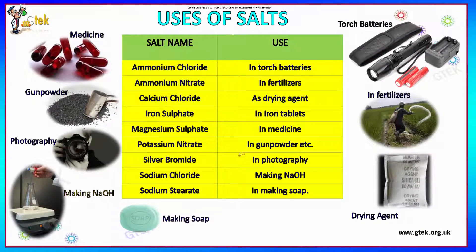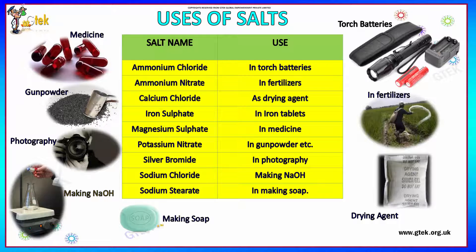Now we talk about the uses of salts. Ammonium chloride is used in torch batteries. Ammonium nitrate is used in fertilizers. Calcium chloride is used as a drying agent. Iron sulfate is used for iron tablets. Magnesium sulfate is used for medicine. Potassium nitrate for gunpowder. Silver bromide in photography. Sodium chloride for making sodium hydroxide, and sodium stearate for making soap.